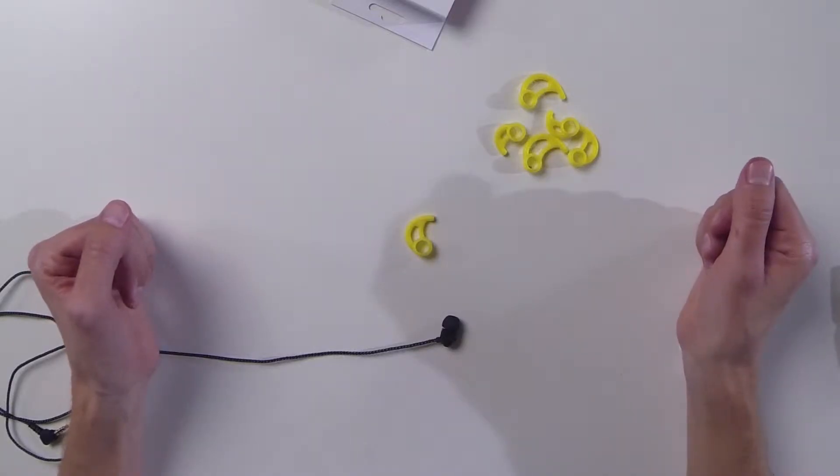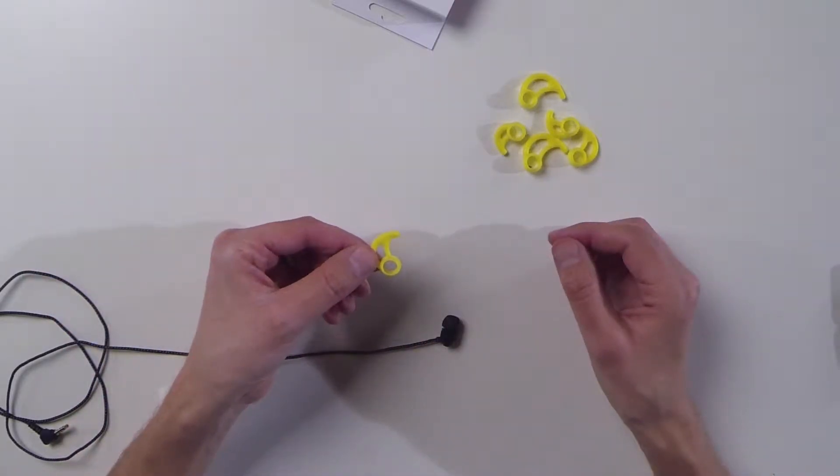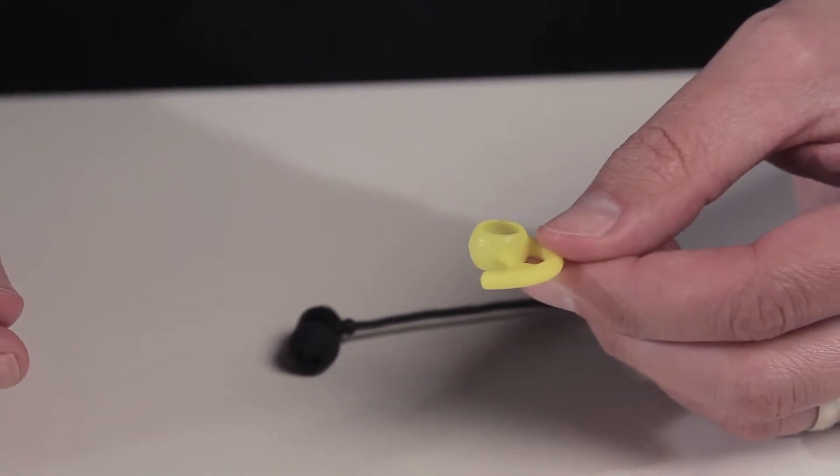For a single earphone, you can set it up either for the left ear or the right ear. To set it up for the left ear, hold the wing so that the curve is on the left hand side.